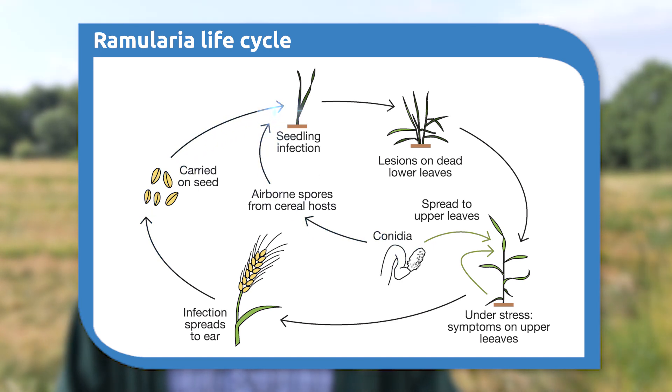To identify Ramularia leaf spot in a crop we're looking for the five Rs: a rectangular lesion on the leaves, a reddish brown colour to the lesion, a lesion that is restricted by the leaf veins, a lesion which is the same on both sides of the leaf — in other words the necrosis is right through the leaf — and finally a ring of chlorosis or yellow tissue around the lesion.